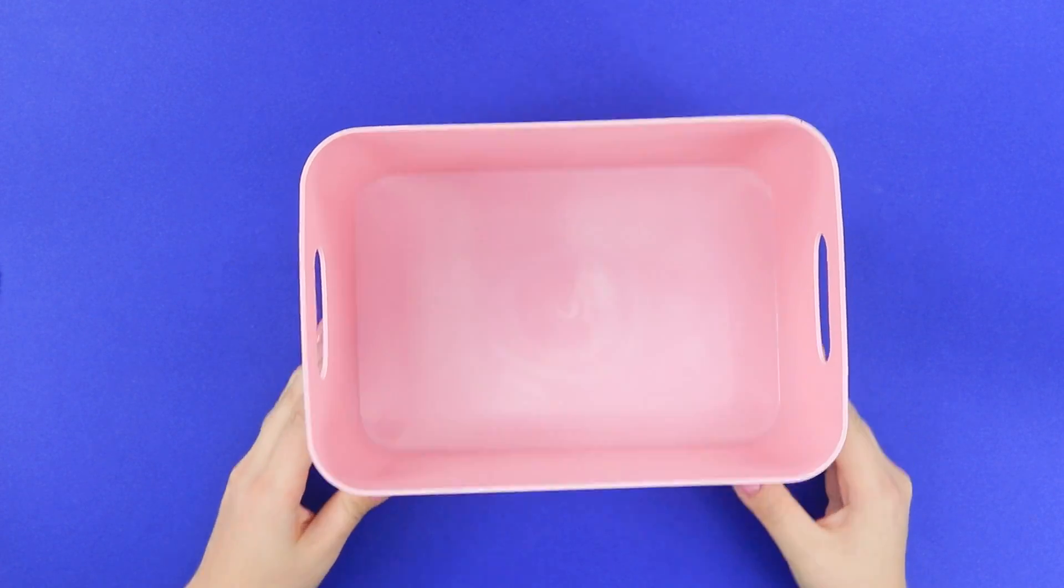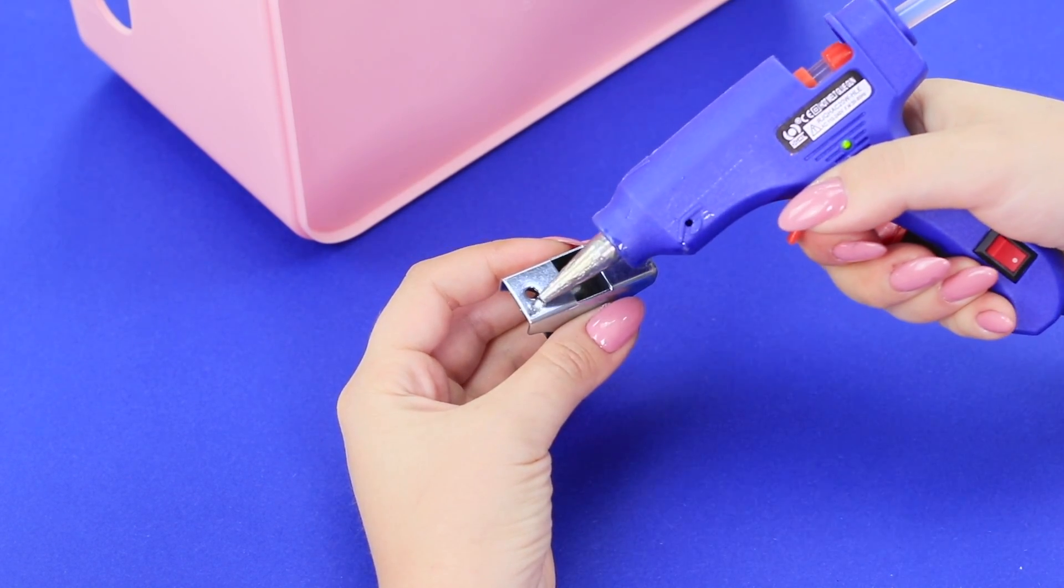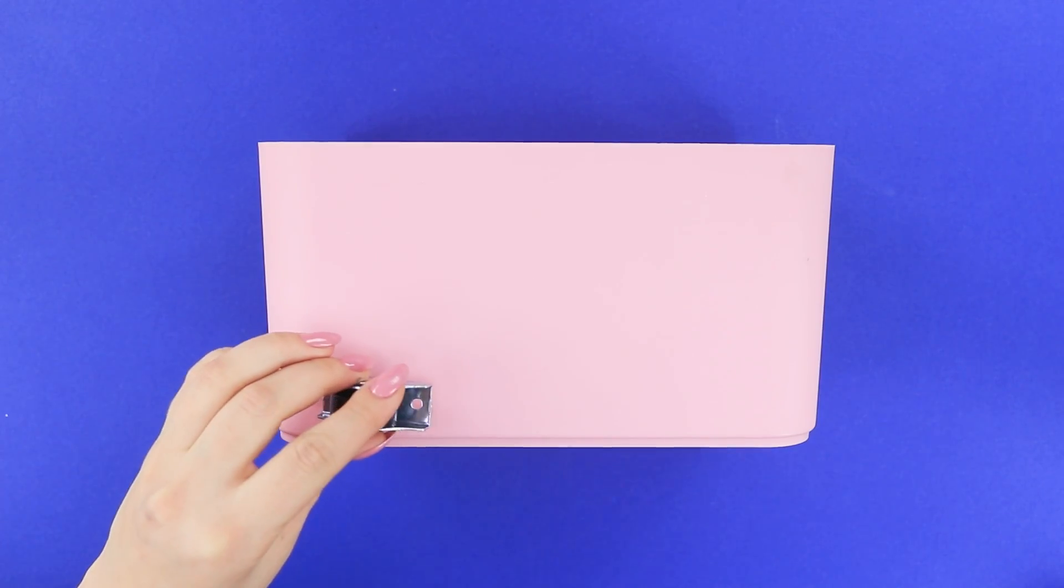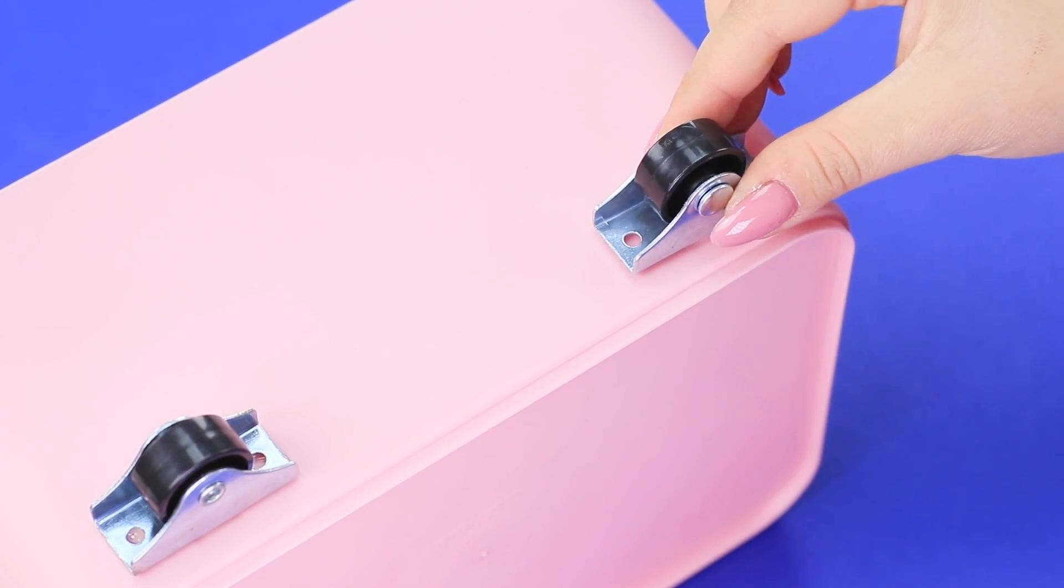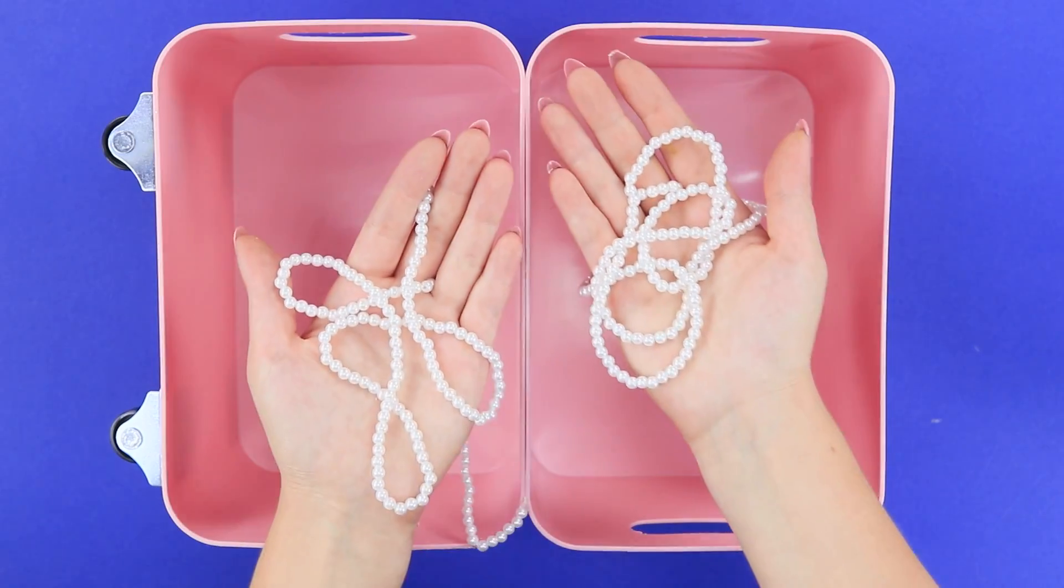Do you have old plastic boxes you don't need? We can use furniture wheels to make them move a little. Hot glue them to the sides. You need four. Turn the box upside down and attach another box on top. Decorate it with pearl beads.